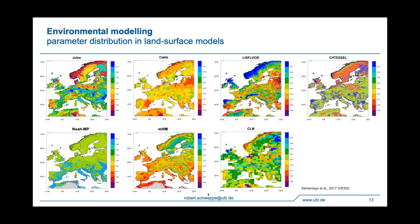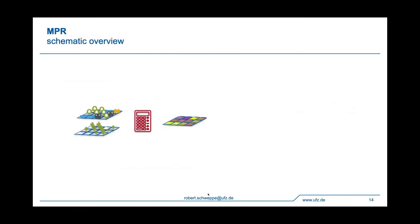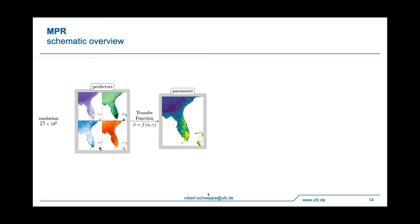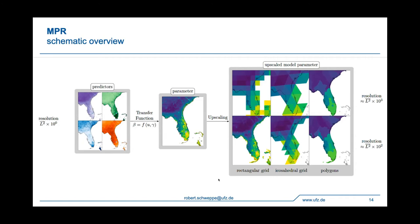So this is where this parameter estimation concept that colleagues of mine developed comes into play. It's called the multiscale parameter regionalization approach. And it basically does what I've previously shown you. It uses some predictor variables with a transfer function, and then derives the parameter field. And this is done at a high resolution of the predictor fields. And then in the second step of that method, these parameters are upscaled to the target resolution of the model, because they're usually not run on these higher resolutions. And for that, the second upscaling step is necessary. And this approach has the advantage that it minimizes the aggregation error as it first calculates the parameter and then aggregates. And not the other way around, which is very common also in other approaches.